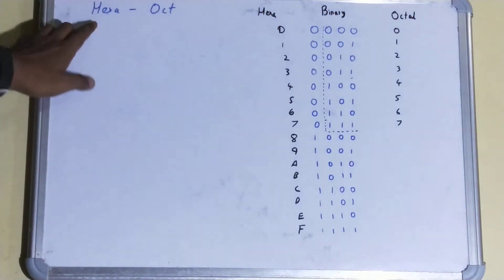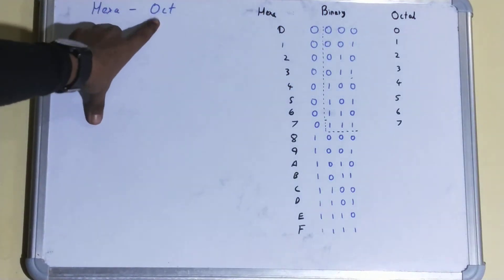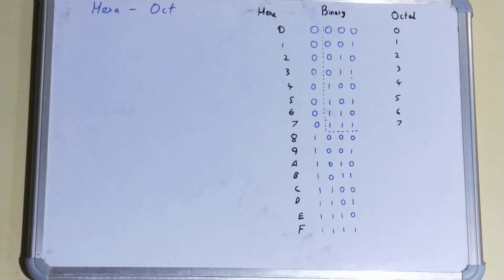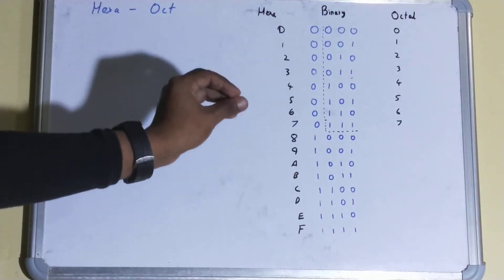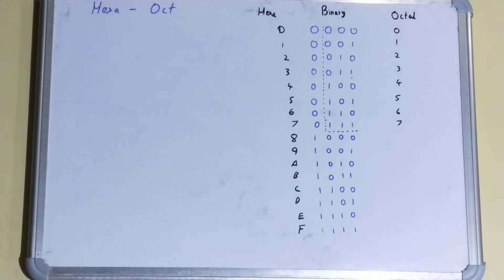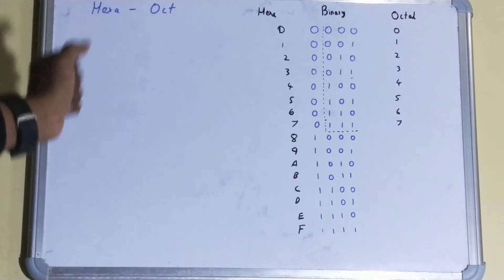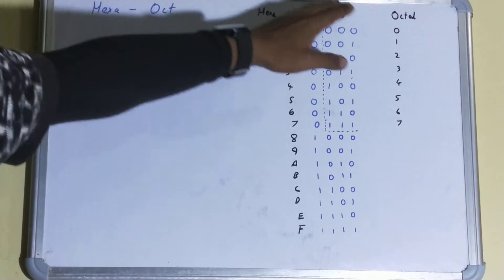Friends, in this video I'll be helping with how to convert your hexadecimal number to your octal number. So let's start. Before coming to the problem, you need to know this table very well because this table will make your work very easy while you're converting. So let's see the table itself. This table is your binary representation, this is your hexadecimal, and this is octal.